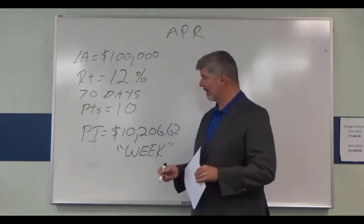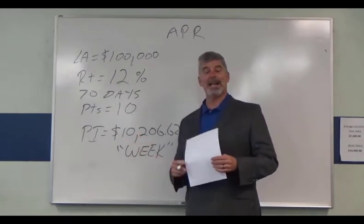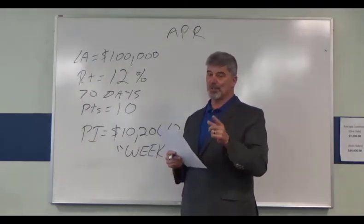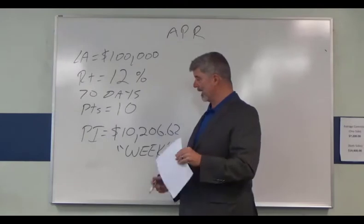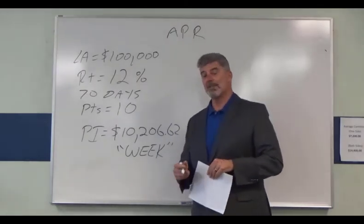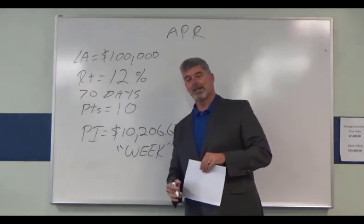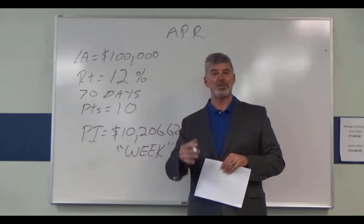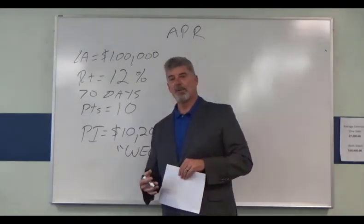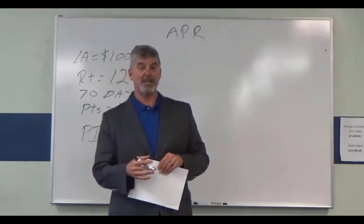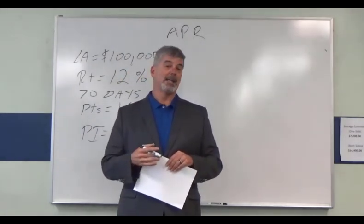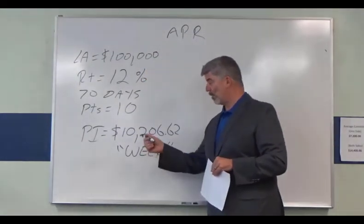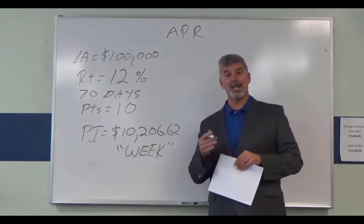Here's one version. I calculated the principal and interest using a fancy mortgage calculator on the internet — this is not something you can do with just plus, minus, multiply, and divide. Believe it or not, if this is amortized over weekly payments, the weekly payment is $10,206.62 a week. If we multiply by 10 — 70 days would have 10 payments — that tells us how much we paid over 70 days, which would be $102,066 and change.